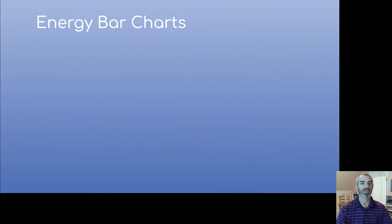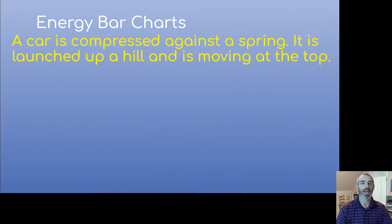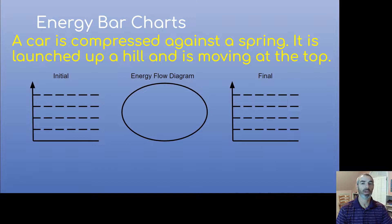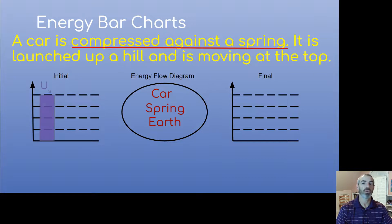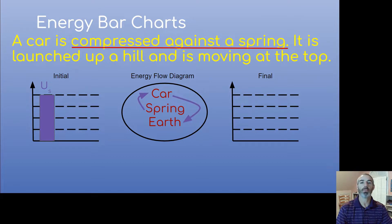Now let's look at a fourth and final example. A car is compressed up against a spring — a lab cart — and it's launched up a hill and is moving at the top of the hill. We define our system: we have a spring, something that's moving, and the earth. We ask the three questions. Is anything stretched or compressed? Yes — the spring is compressed. So we draw U subscript S and draw a bar underneath that. The spring transfers its energy to the car, but the car also changes height, so it's not going to be moving as fast as it was moving horizontally.